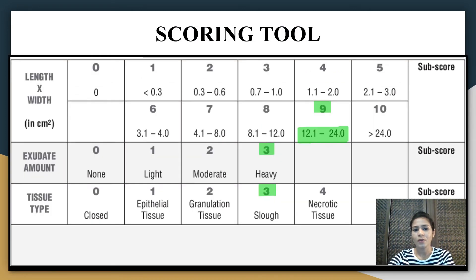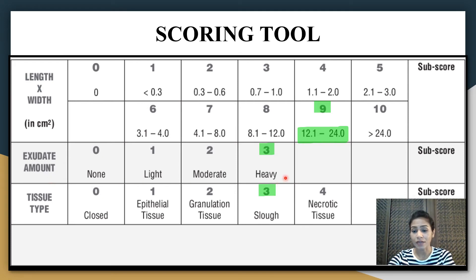I hope now you have an idea of how to use the scoring tool. For this example: length × width gave 15 cm², which lies in the range giving a subscore of 9. For exudate amount, I noticed heavy exudate, so I gave a score of 3. And for tissue type, I noticed slough in the wound, so I gave a score of 3. Total PUSH score = 9 + 3 + 3 = 15.